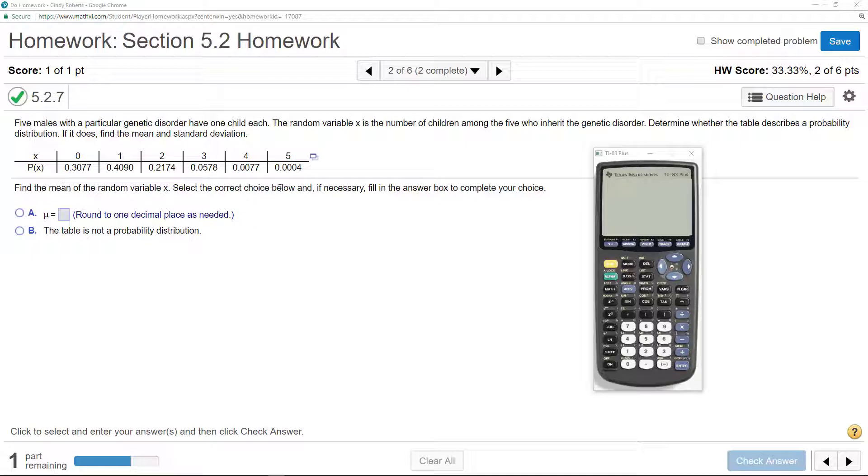It's asking me first if this is a probability distribution. How you tell that is you simply add up all the probabilities, and they should equal 1. All right, so if they don't, then this is not a probability distribution.